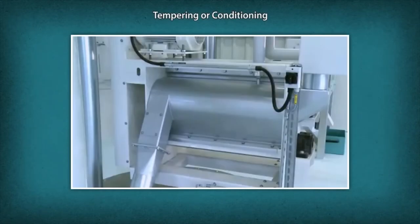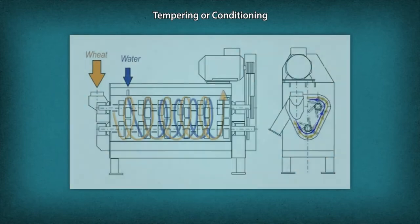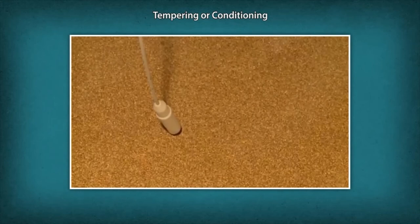Tempering or Conditioning: Modern milling practices utilize conditioning or tempering before the grain is ground. This involves adding water to grain to raise the moisture of hard grain. After moisture is added, the grain lies in tempering bins or drying units for the desired hours. Tempering softens or mellows the endosperm, making it easier to grind.